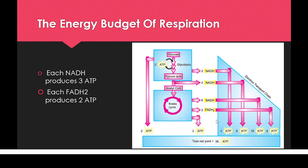The Krebs cycle itself also directly produces 2 ATPs. Adding up all the ATPs: 2 from glycolysis, plus 4 from glycolytic NADH via ETC, plus 6 from pyruvate conversion NADH, plus 18 from Krebs cycle NADH, plus 4 from FADH2, plus 2 from the Krebs cycle directly — this gives a total of 36 ATPs overall.